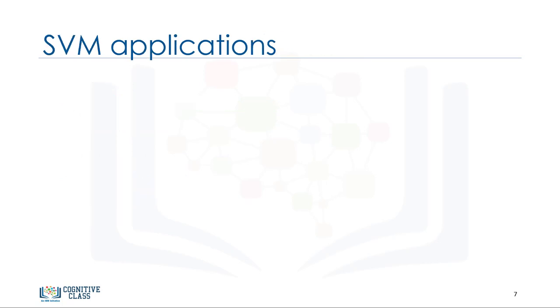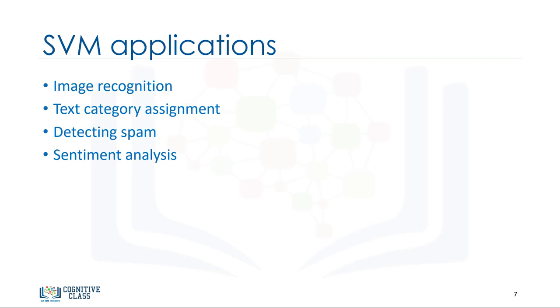And now, our final question is, in which situation should I use SVM? Well, SVM is good for image analysis tasks, such as image classification and handwritten digit recognition. Also, SVM is very effective in text mining tasks, particularly due to its effectiveness in dealing with high dimensional data. For example, it is used for detecting spam, text category assignment, and sentiment analysis. Another application of SVM is in gene expression data classification, again because of its power in high dimensional data classification.